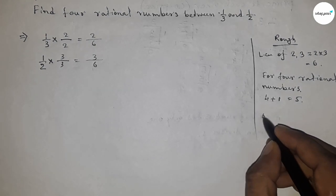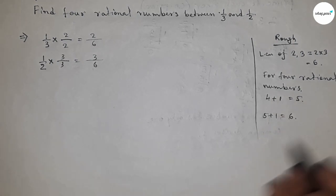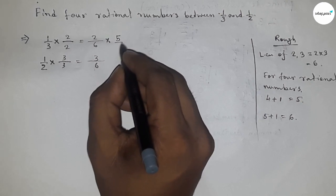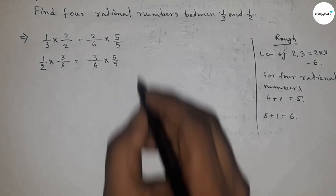So we multiply by 5/5 up and down. If we had to find five rational numbers, we would multiply by 6. Here we multiply both by 5/5: 2/6 becomes 10/30 and 3/6 becomes 15/30.